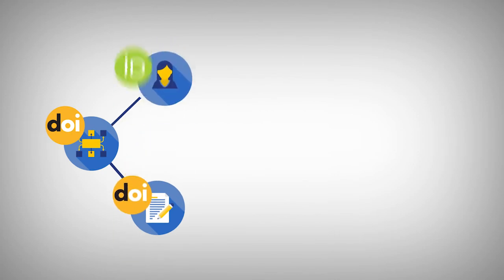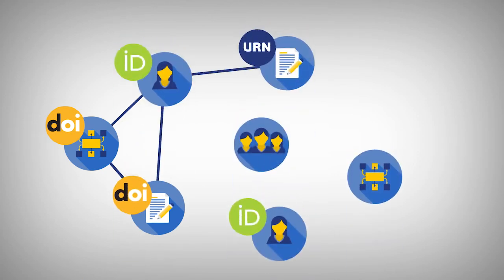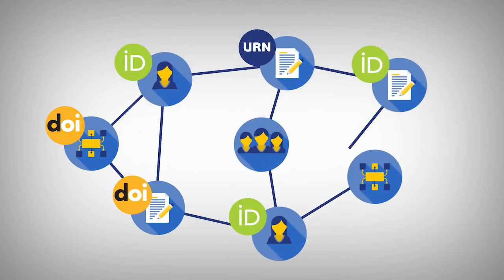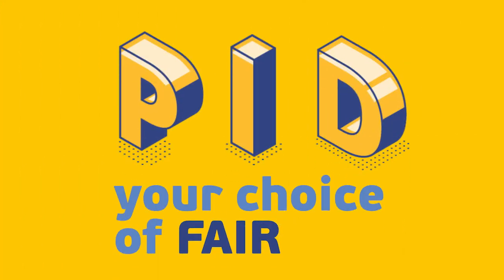When you cite your data with a PID, it is sustainably linked to the article, the authors, the publisher, and any funding authority. By using persistent identifiers, both you and the research community benefit from the FAIR principles.